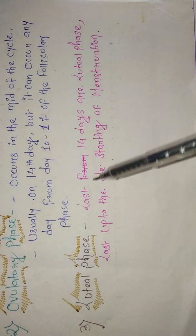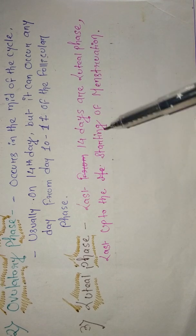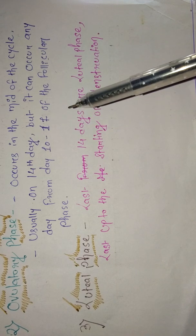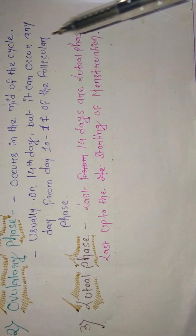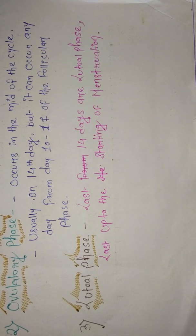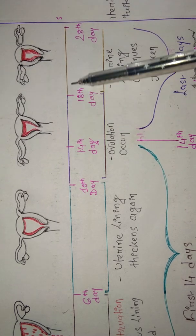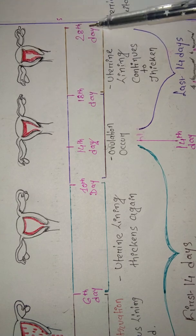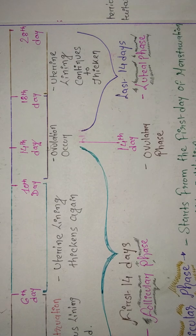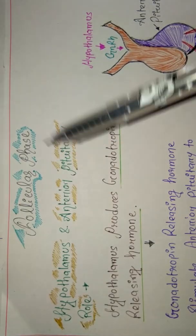The luteal phase covers the last 14 days of the cycle. It begins after ovulation and lasts until the start of the next menstruation. So: after the ovulatory phase, from the 14th day until the next menstrual period, this is called the luteal phase.